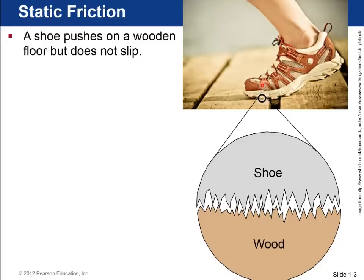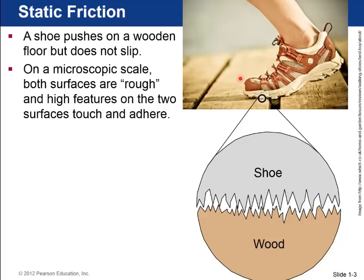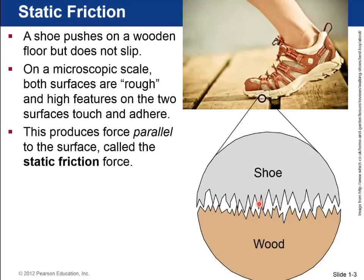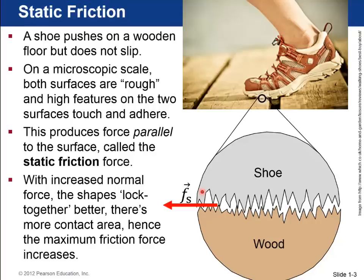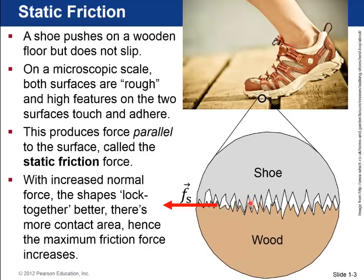Okay, so here we have a shoe that is pushing on a wooden floor, but it doesn't slip. And I guess the wooden floor is pushing to the left on this shoe and propelling this guy forward. So on a microscopic scale, no matter how smooth something looks, it's actually rough. And you can see this highly zoomed in picture of the shoe. It's got all these spikes hanging down, and the wood will have all these spikes pushing up. And these two features will touch each other and even stick together a little bit. And this produces a force that's parallel to the surfaces called the static friction force. And if you increase the normal force, it can push these surfaces together even a little bit more and lock these shapes a little bit better and also increase the contact area, and so the maximum size of this static friction force can increase.